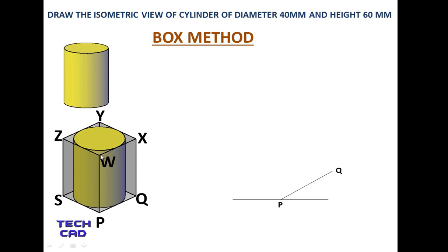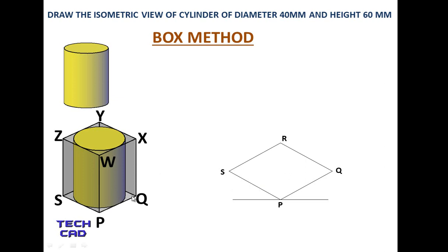PQRS is a square because PQ and PS are both equal to the diameter, which is 40 mm. In the same way, WXYZ is also a square because all sides equal the diameter. Now PQ is drawn exactly at an angle of 30 degrees, and PS is also exactly at an angle of 30 degrees with a length of 40 mm. Then you draw QR and join S with R, so this becomes the base of the box.